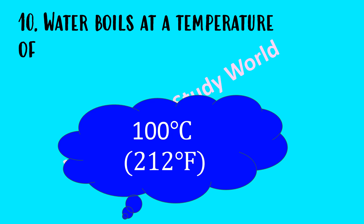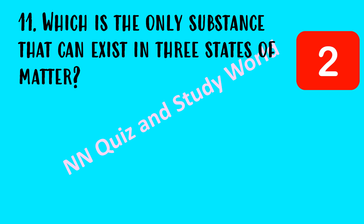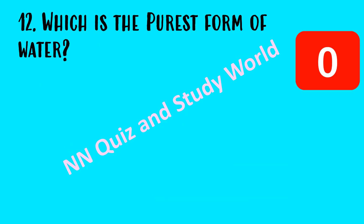Water boils at a temperature of dash. The answer is 100 degrees Celsius or 212 degrees Fahrenheit. Which is the only substance that can exist in three states of matter? The answer is water.